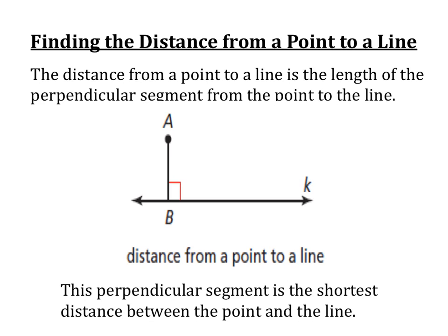First, let's talk about finding the distance from a point to a line. The distance from a point to a line is the length of the perpendicular segment from the point to the line. Let's say we have point A, not on line K, and we want to know the distance from point A to line K. It's going to be that perpendicular length from A to a point perpendicular to line K, which we'll call point B. So the shortest distance from any point to a line is the perpendicular distance — this perpendicular segment is the shortest distance between the point and the line.